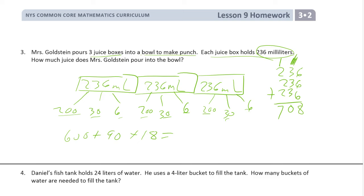Adding all the hundreds together: 2, 4, 6, and one more makes 7 — seven hundred and eight. There are two different ways to add it: you can do the number bond strategy or the vertical method, or maybe you have a whole other strategy that works for you. Either way, you have to show how you figured out that those three added together is 708.